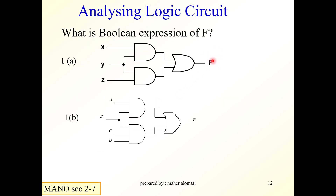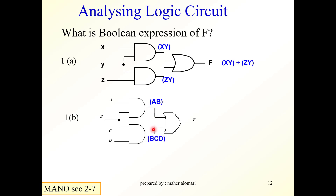For another circuit example, we analyze starting from the input side. The output of the first gate is X·Y, the output of the second gate is Y·Z, and the final output F is the sum of these two terms. Similarly, in the next circuit the outputs are A·B and B·C·D, with final output F being the sum of these terms.